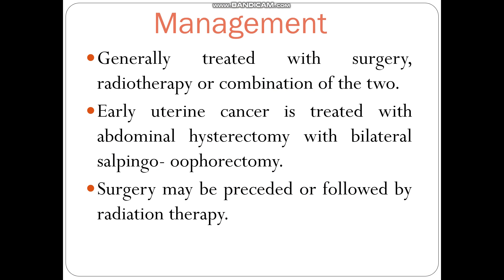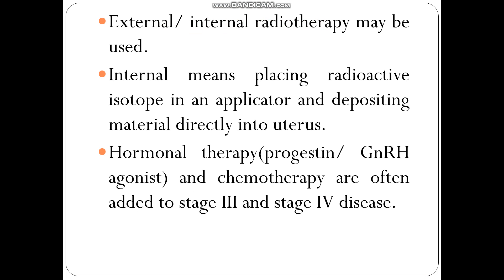Coming to the management, it is generally treated with surgery, radiotherapy, or a combination of these two. Early uterine cancer is treated with abdominal hysterectomy with bilateral salpingo-oophorectomy, similar to the surgery for ovarian cancer. Surgery may be preceded or followed by radiation therapy, which can be given as adjuvant therapy.